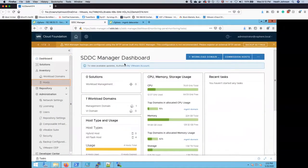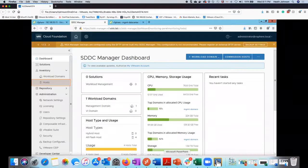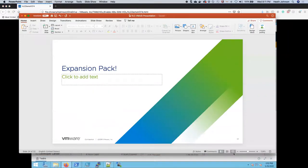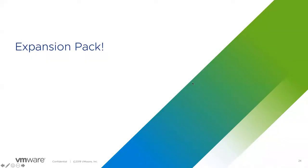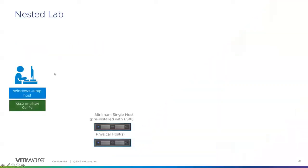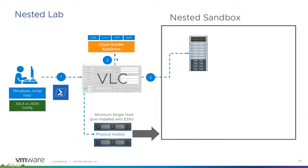That covers the installation of just the management domain. Next is the expansion pack. This is where things get really cool with Cloud Foundation: we've deployed that initial management domain, got everything stood up, created our first four-node vSAN cluster nested on one physical host. The next part is: what if I want to install more software? You can use that single physical host or add more physical ESXi hosts and install via the expansion pack. To add more capacity to Cloud Foundation, you have to deploy more ESXi hosts and create workload domains or scale out the management domain.